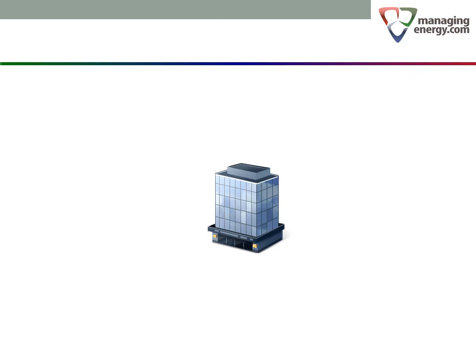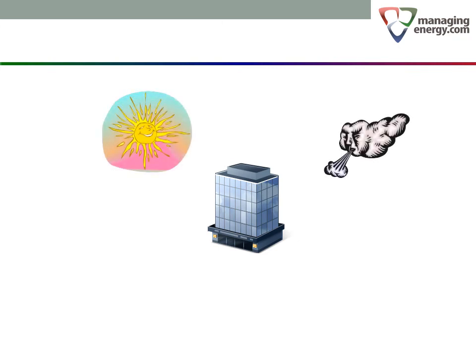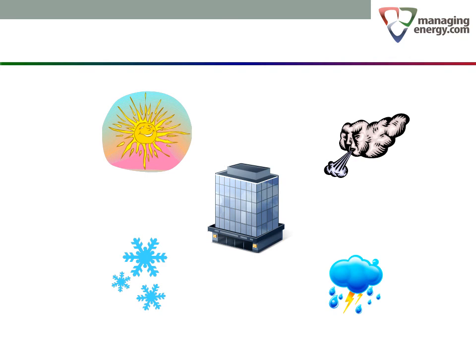Of course, weather is more than just outdoor temperature. Wind, humidity, cloud cover, and precipitation all have an effect on the heating and cooling required in a building. More air conditioning will be needed on a bright, humid day than on a cloudy and less humid day. However, outdoor temperature is the major weather element and it serves as a reasonable proxy for the other elements. Adding more weather variables would increase the complexity of any analysis, so the energy efficiency industry has accepted this simplification. It is quite possible that future work will bring these other variables into accepted industry practice.